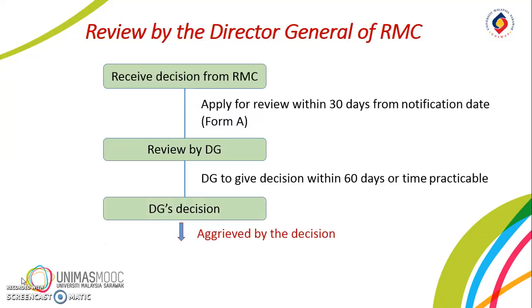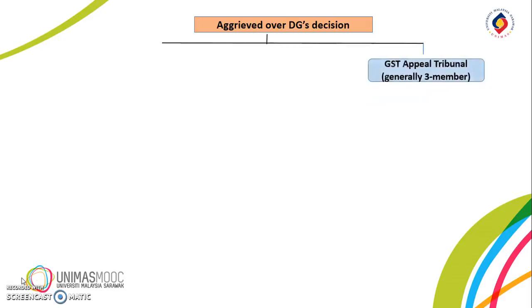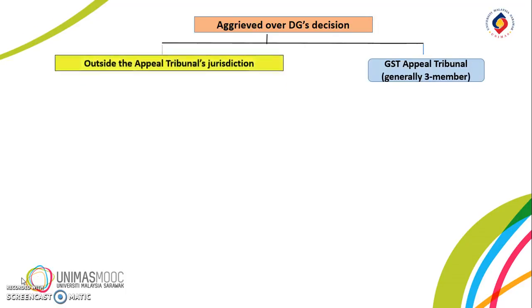What if the person is aggrieved by the DG's decision? Does he have the right to appeal? Yes. An aggrieved person can appeal to the GST Appeal Tribunal, which generally is made up of a panel of three members, and the Chairman or Deputy Chairman must be from a judicial and legal service. Note that not all matters can be appealed to the Tribunal.